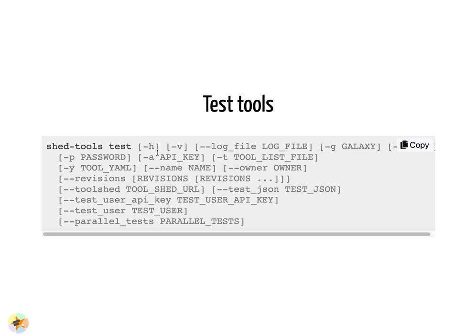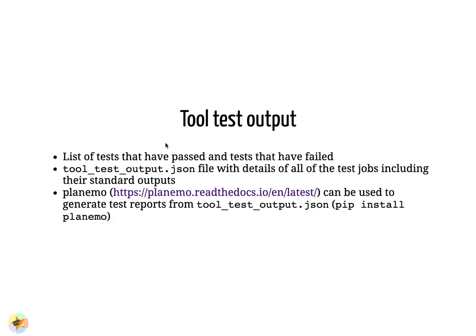shed_tools also has a command to test tools: run_tool_tests. A good tool will have tests — instructions within the wrapper to run the tool with test input and check whether the tool produces the expected output, and also to verify that dependencies have installed correctly. You need to be an administrator to install tools, but any Galaxy user with an API key can run tool tests. The output will be a list of tool tests that passed and failed, plus a detailed file of data from test jobs useful for debugging. There's a Python library, Planemo, that can generate a user-friendly report from the JSON data.